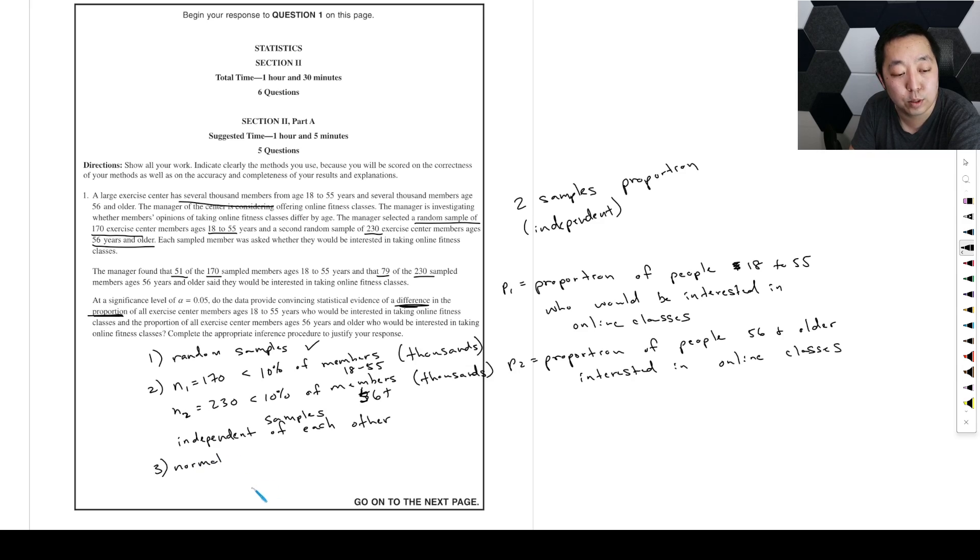And then 3 is the normality condition. Here we're using a normal approximation to the binomial distribution. So we have to have N1*P1 to be greater than or equal to 10, N1*(1-P1) to be greater than or equal to 10, and then we need N2*P2 has to be greater than or equal to 10, and N2*(1-P2) is greater than or equal to 10. Or in other words, the number of successes and failures in our thing have to be greater than 10. So in this case, the proportion of people who said yes is 51, which is greater than or equal to 10. Then 170 minus 51 is going to be 119, which is greater than or equal to 10. And then this one is 79, which is greater than or equal to 10. And then 230 minus 79 is 151, which is greater than or equal to 10 also. So we've checked those conditions.